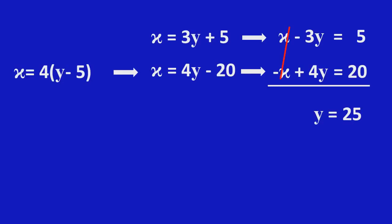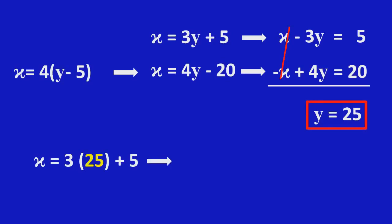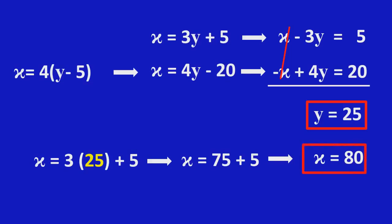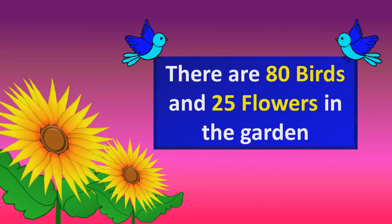So, Y is equal to 25. The number of flowers is 25. Substituting the value of Y in the first equation, we get X equals 3 into 25 plus 5, which equals 75 plus 5, which equals 80. So, the number of birds is 80. There are 80 birds and 25 flowers in the garden.